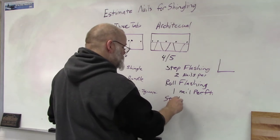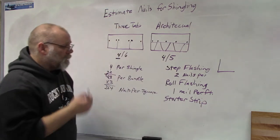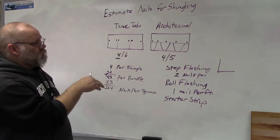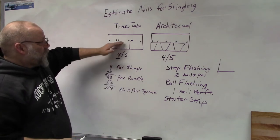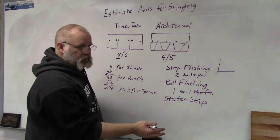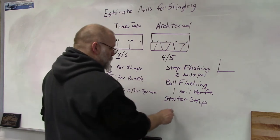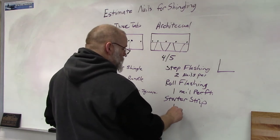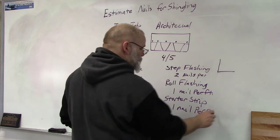Another one you have to worry about is starter strip, whether you use shingles for your starter strip where you would add the four for that, or you get the roll starter strip where it comes in a roll and you just roll it out. Again, you're going to use approximately one nail per foot.